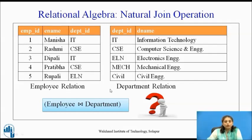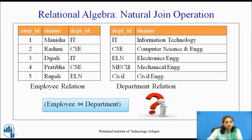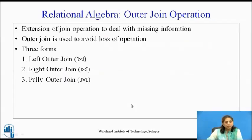Now consider the employee and department relations. Perform the natural join of employee and department — pause the video and write down the result. The common attribute is department_id. Note that mechanical and civil are departments with no employees in the employee table, so those departments are lost in the natural join result.